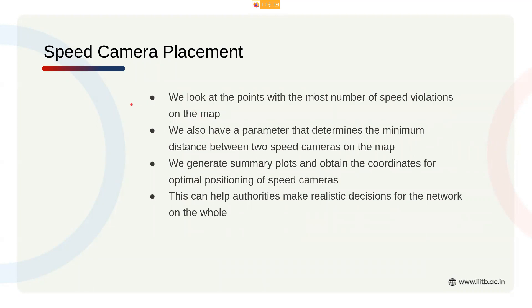Next, speed camera placement looks at the points with the most number of speed violations on the map. We also have a metric that determines the closest proximity of two speed cameras on an edge. This can help authorities make realistic decisions — for example, putting speed bumps or speed detectors at those locations.